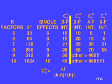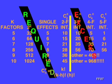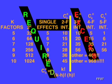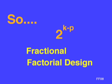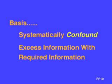In over 40 years of experimentation, I have only seen one three-factor interaction. Two-factor interactions are common, but beyond that, Mother Nature is good to us. So we can draw a line between required information and excess information — we need single effects and two-factor interactions; we usually don't need three-factor interactions and above. This leads us to the 2-to-the-(k minus p) fractional factorial designs, where we still have two levels and k factors, but we introduce a new element p — the fractionalization element. p is a counter and part of the mechanism for constructing fractional factorial designs. The basis of these designs is to systematically confound excess information with required information.